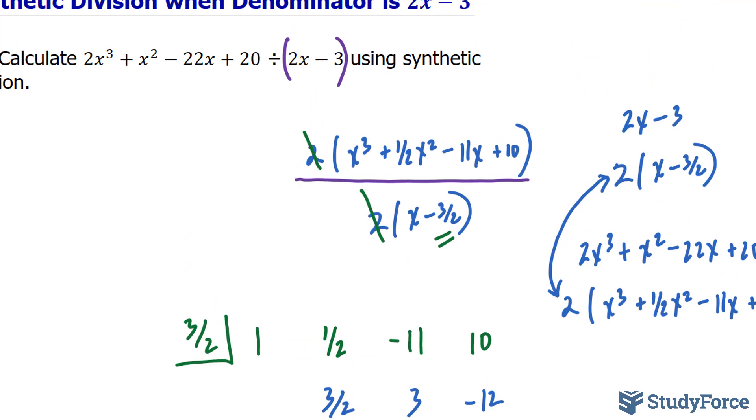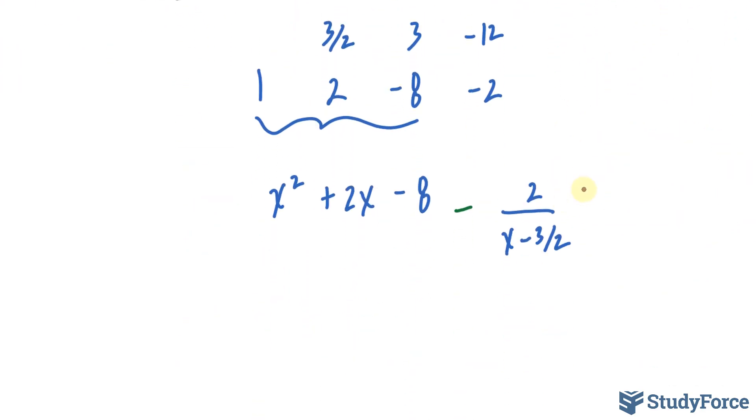And you can even take this a step further and rewrite the denominator as it was originally. Originally it was 2x minus 3, and we can apply a little bit of algebra by multiplying the bottom and the top of just this fraction by a factor of 2. If we do that, that becomes a 4, and this returns back to its original state, which was 2x minus 3.